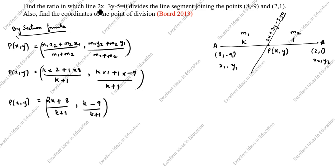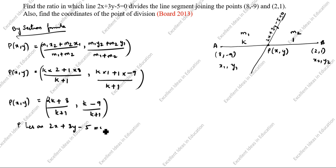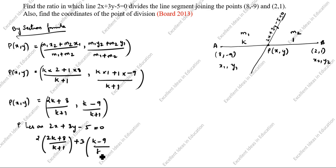Now, in this question we are given that 2x plus 3y minus 5 equals 0. Since P lies on this equation, we substitute x as 2k plus 8 over k plus 1 and y as k minus 9 over k plus 1. So: 2 times (2k plus 8 divided by k plus 1) plus 3 times (k minus 9 divided by k plus 1) minus 5 equals 0.